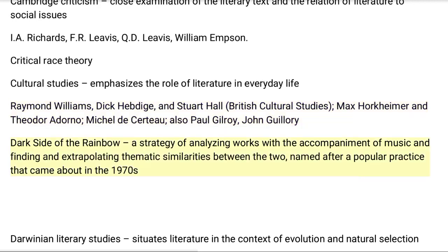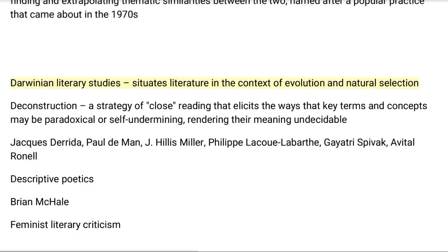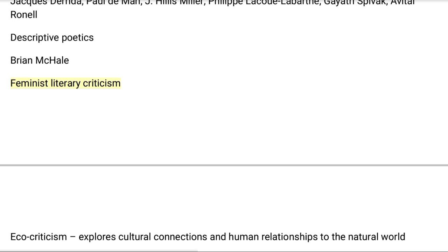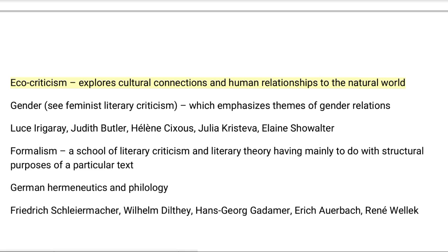The 'Dark Side of the Rainbow' is a strategy of analyzing works with the accompaniment of music, finding and extrapolating thematic similarities between the two, named after a popular practice that emerged in the 1970s. Darwinian literary studies situates literature in the context of evolution and natural selection. Deconstruction is a strategy of close reading that elicits the ways key terms and concepts may be paradoxical or self-undermining, rendering their meaning undecidable; associated with Jacques Derrida, Paul de Man, J. Hillis Miller, and Gayatri Spivak. Feminist literary criticism and ecocriticism explore cultural connections and human relationships to the natural world, emphasizing themes of gender relations, with scholars such as Luce Irigaray, Judith Butler, Hélène Cixous, and Julia Kristeva.